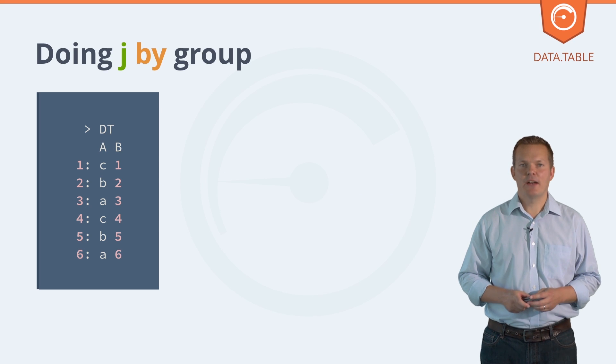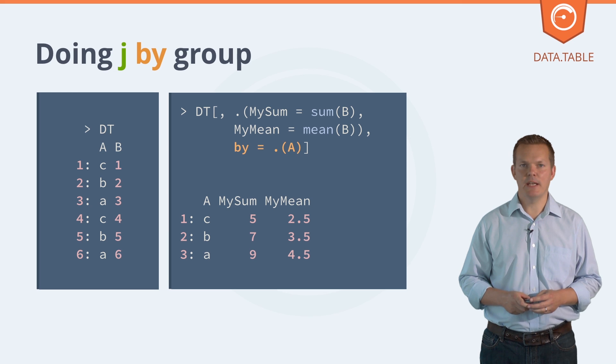In the last section, we saw calculating aggregates and doing other things in J. This section will do that by group, and we simply pass the column names into the third argument of data table queries, which is by.